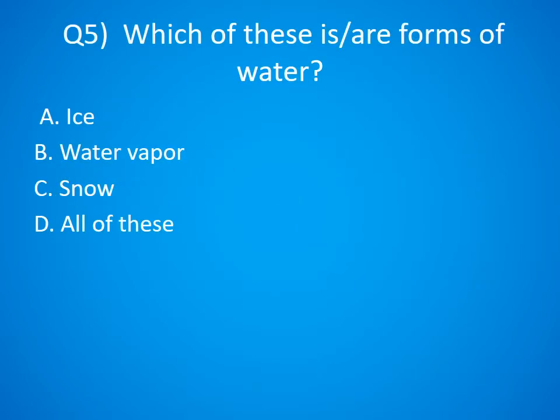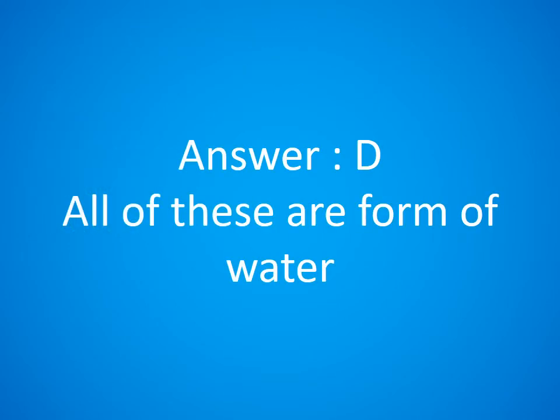Question 5. Which of these are forms of water? A. Ice, B. Water Vapor, C. Snow, D. All of these. The answer is D. All of these are forms of water.